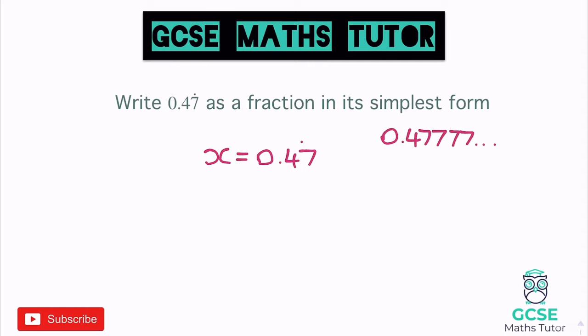When there's only one recurring decimal, we can take this value of x, which is 0.47, and multiply it by 10. Depending on how many recurring decimals there are will determine what we actually want to multiply it by. So if we multiply by 10, we would get 4.7 and then another 7 as it's recurring. I'm going to write the same amount of decimal places as I have above — two decimal places in 0.47, so I'll keep two decimal places in this version.